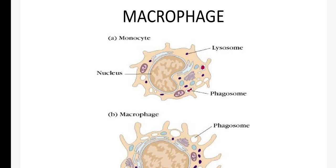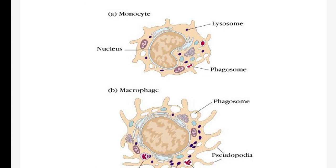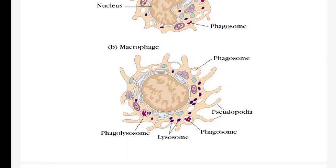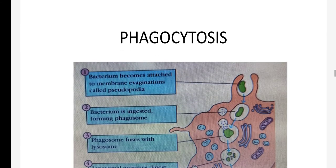Here you can see how a macrophage is formed. It is formed from the monocyte. The monocyte is one type of WBC — it is an agranulocyte, a large-sized cell with no granules in the cytoplasm. When they move to the tissues, they increase in size, develop pseudopodia, develop a large nucleus in the center, and the number of cell organelles increases. Then we call them macrophages.